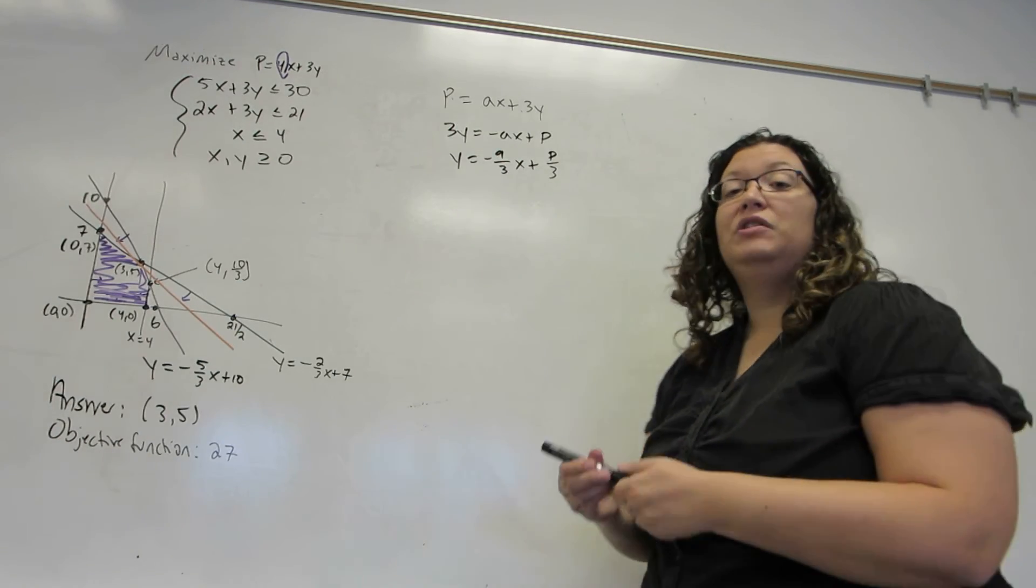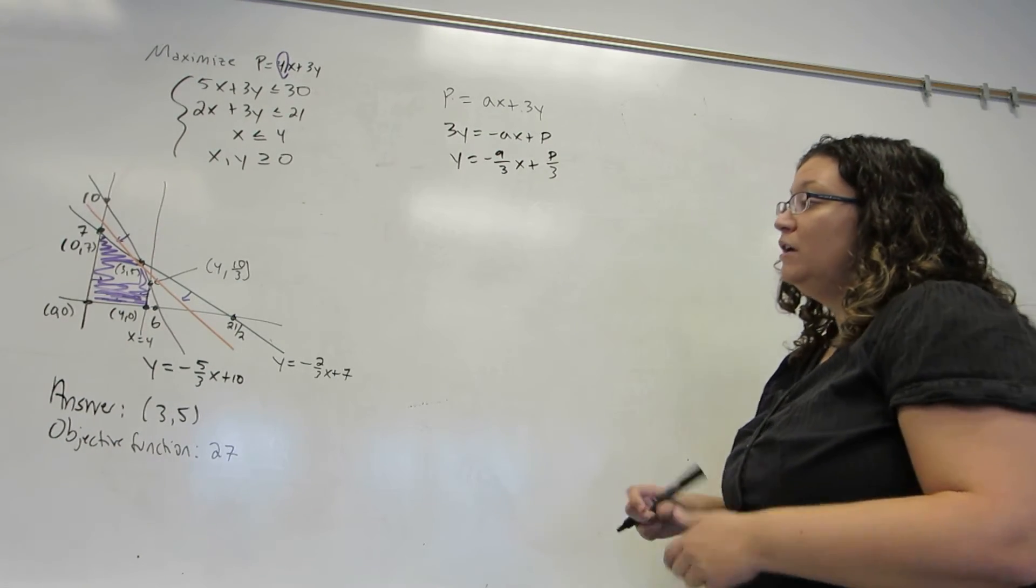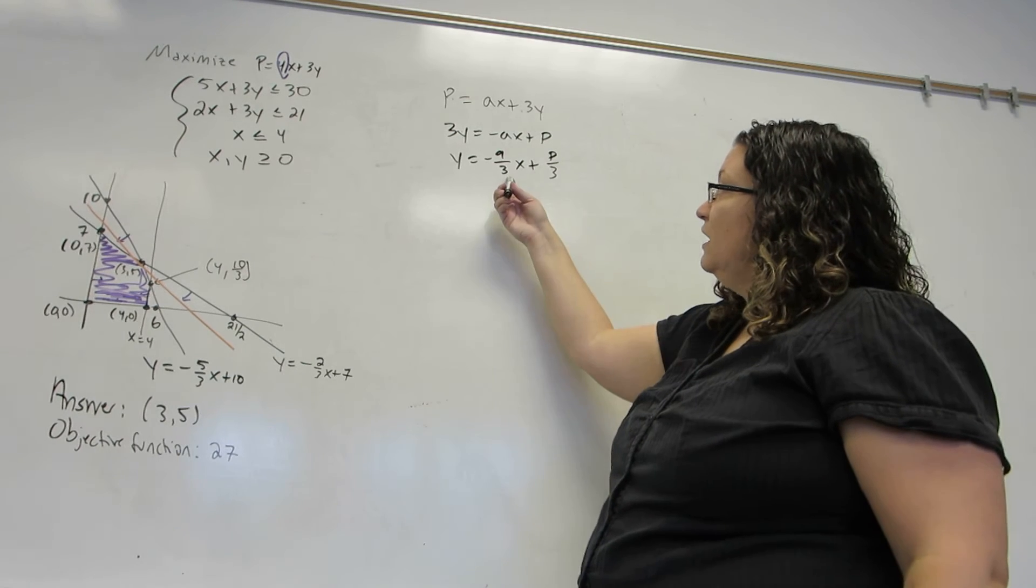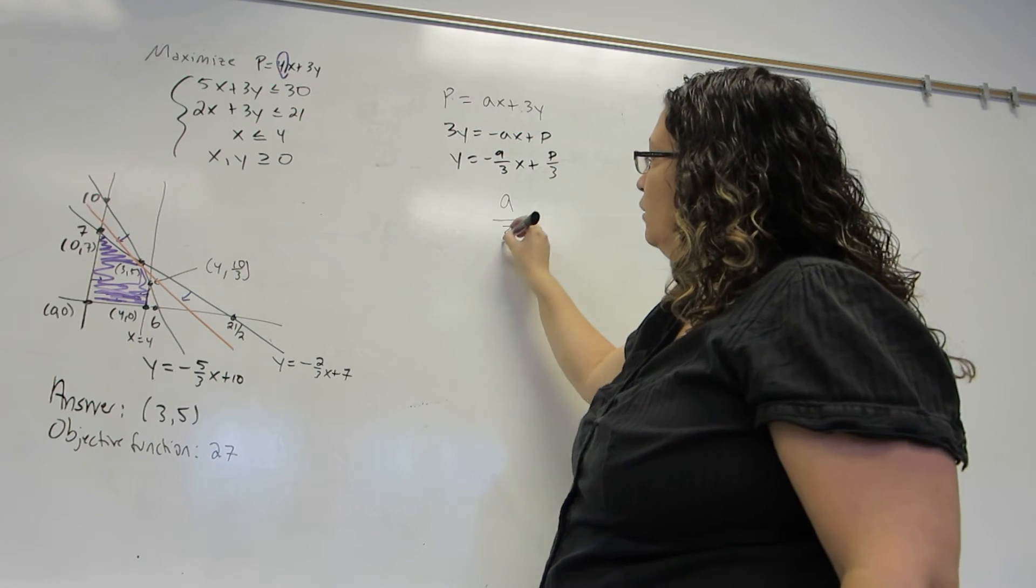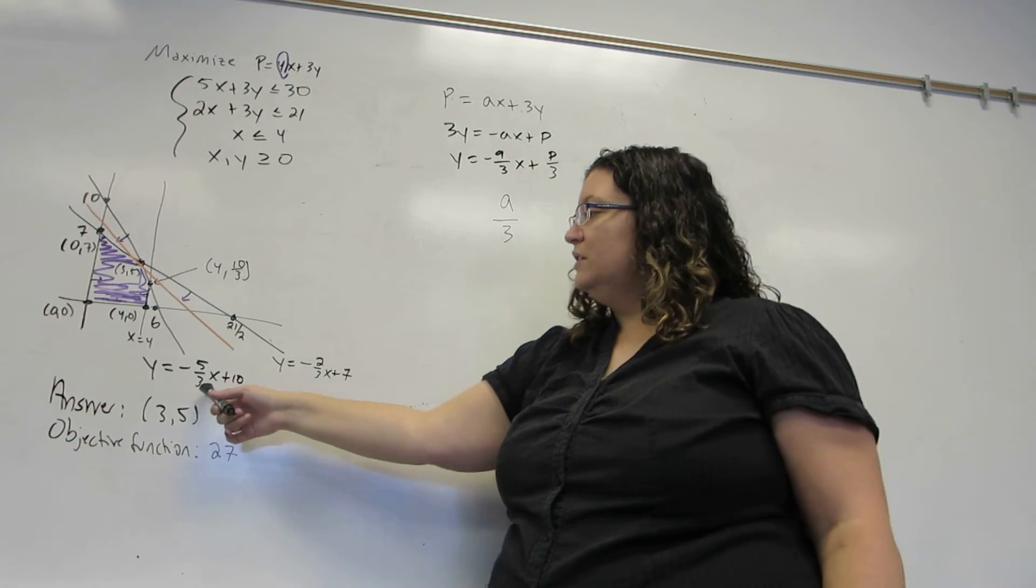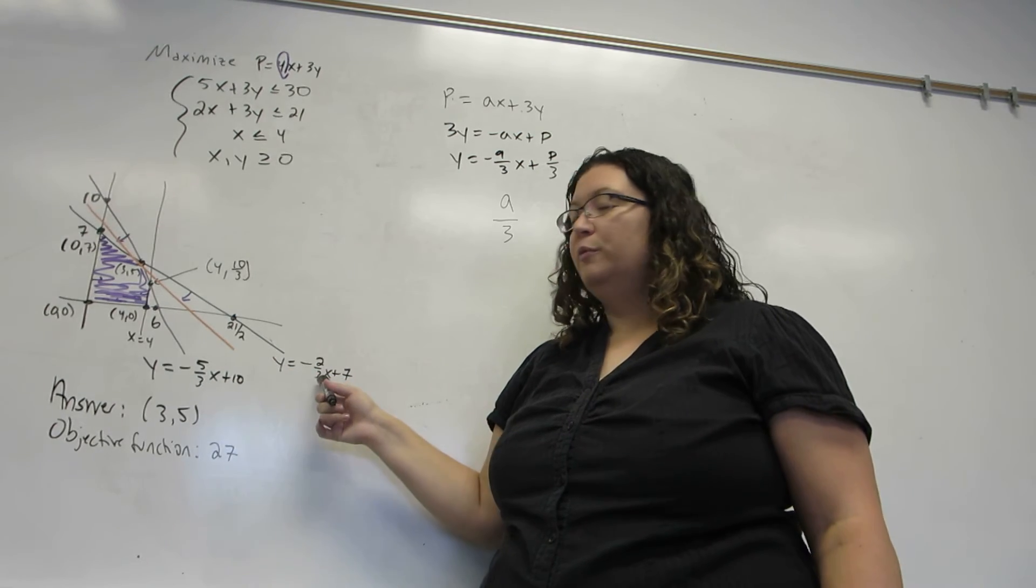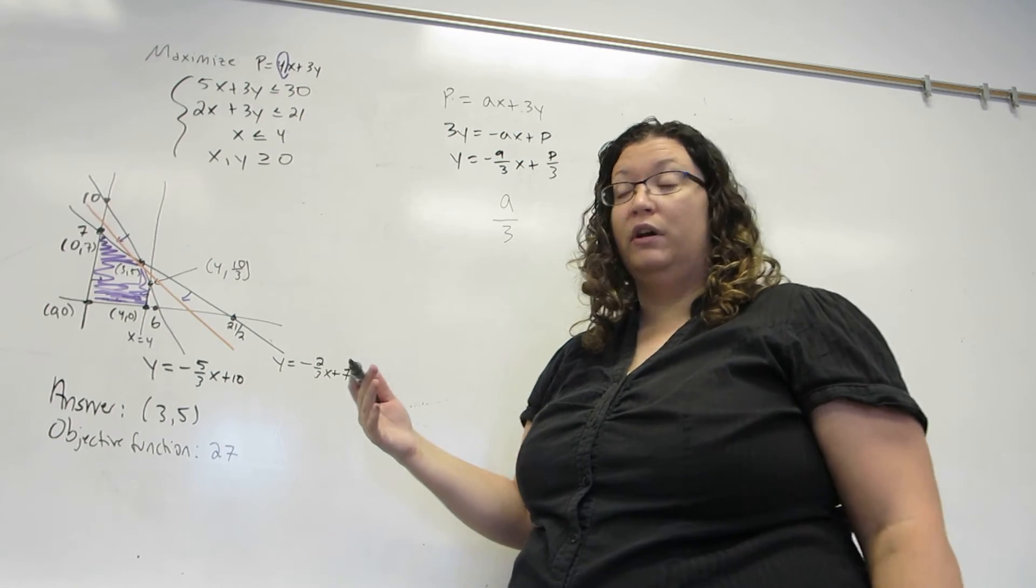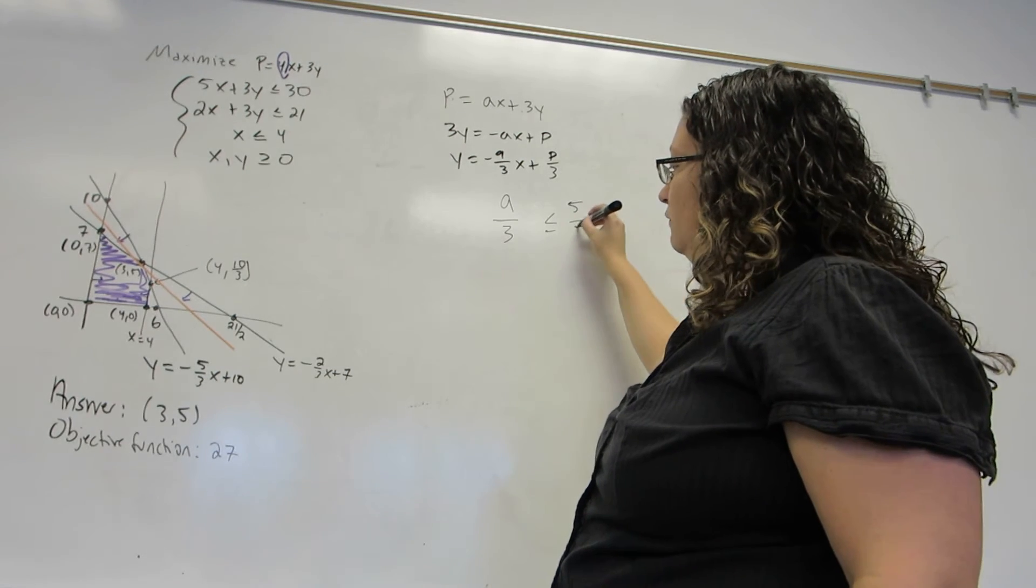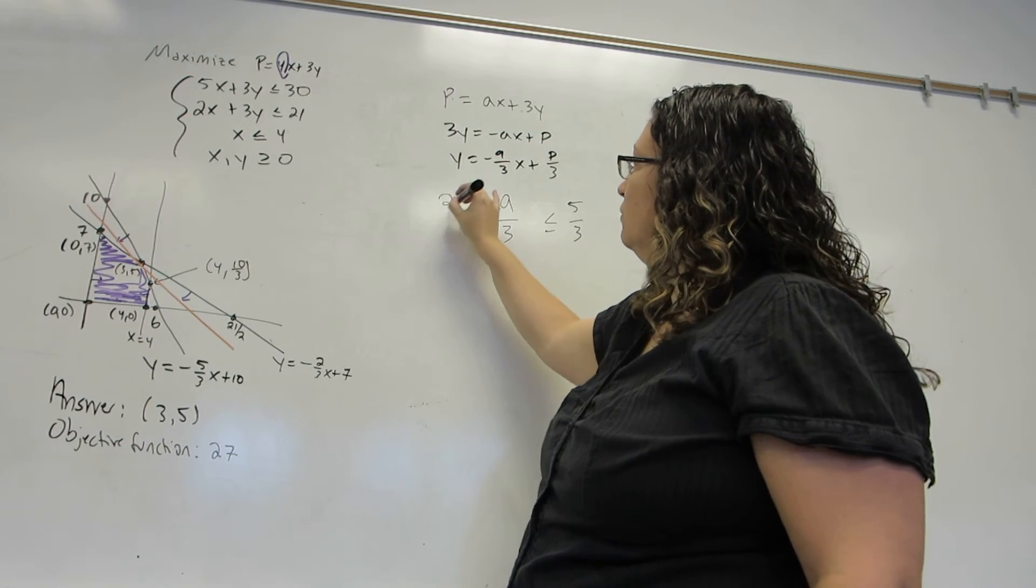I don't want to wiggle it past those lines though, and the way to make sure that doesn't happen is just take the slope of my line a over 3 and say it has to stay in between the slopes of these two lines, the ones that it would run into. So it has to be less than 5 thirds but bigger than 2 thirds.